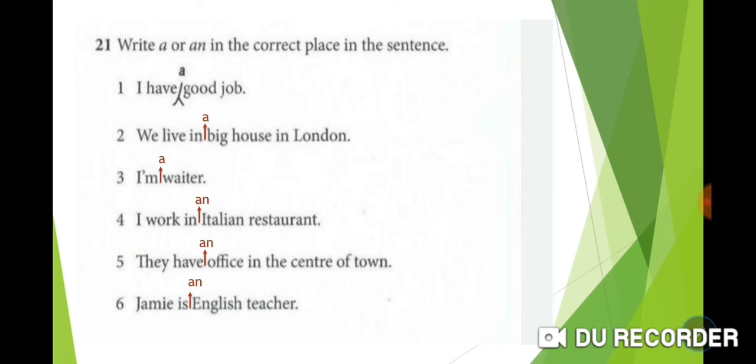Write a or an in the correct place in the sentence. We add the indefinite articles a or an in the appropriate place in the sentence. Number 1: I have a good job. The article comes before the noun, but if there's an adjective before the noun, it comes before the adjective and noun.